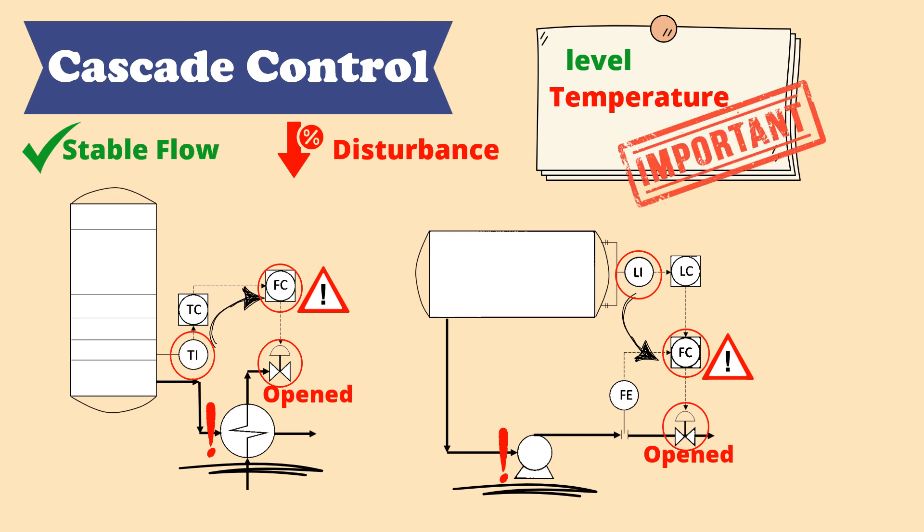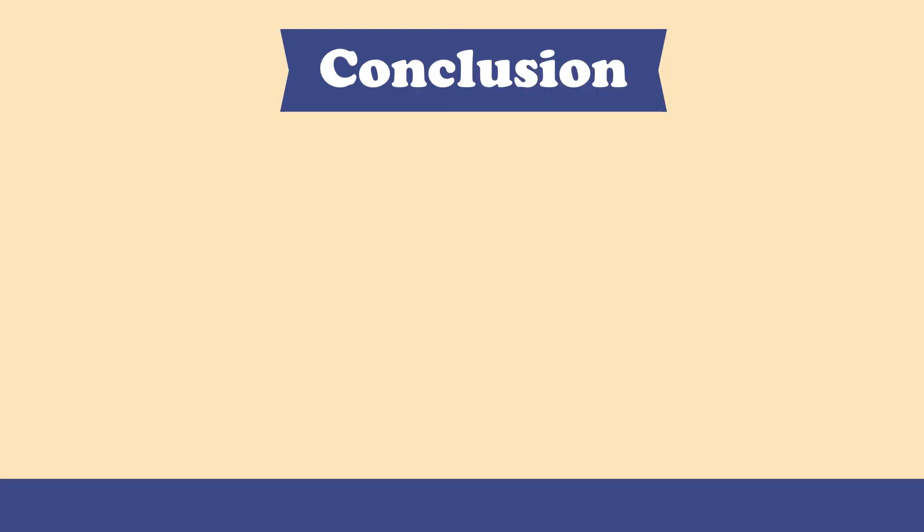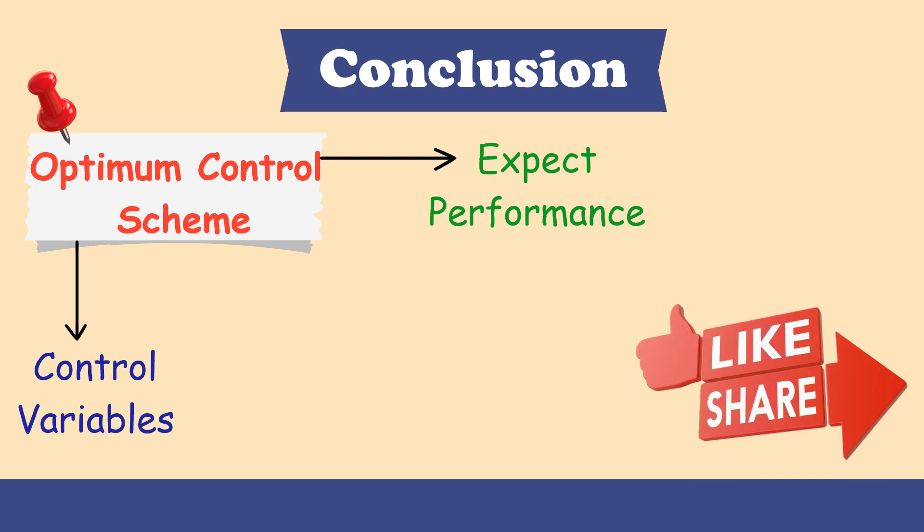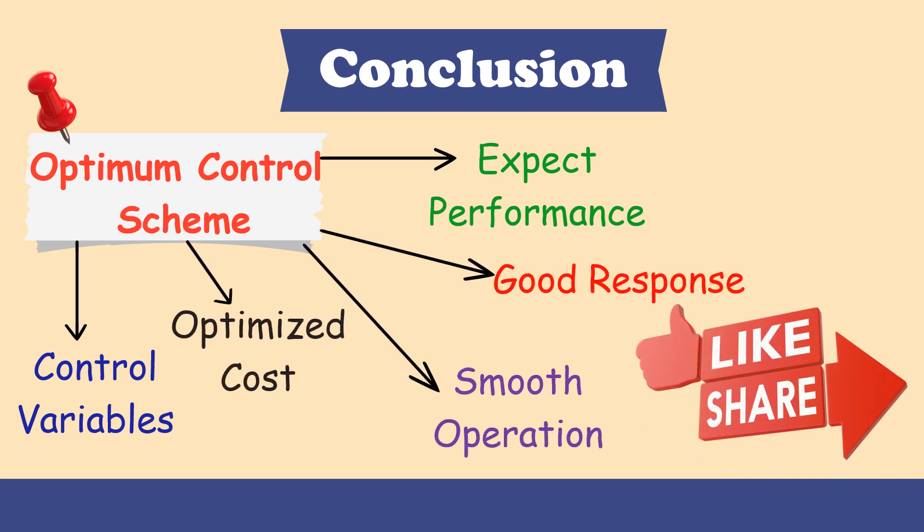So as we have seen, in order to determine the optimum control scheme, it's important to have an understanding on how the system is expected to perform, what are the variables that have the priority to be controlled, the optimum control scheme that ensures a smooth operation, a good response, and an optimized cost.